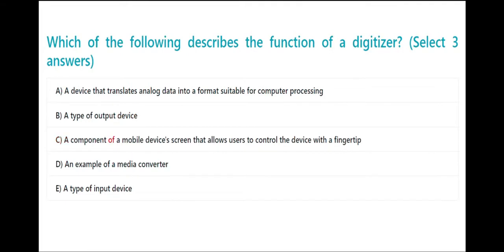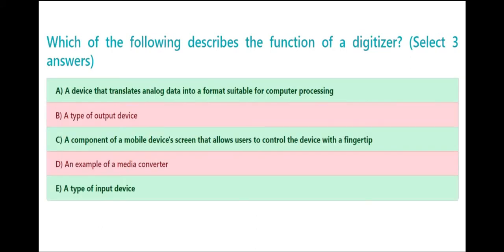A component of a mobile device's screen that allows users to control the device with a fingertip. An example of a media converter. A type of input device. A device that translates analog data into a format suitable for computer processing. The answer is: A component of a mobile device's screen that allows users to control the device with a fingertip and a type of input device.